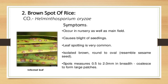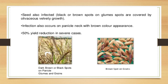The next disease is brown spot of rice. The causal organism is Helminthosporium oryzae. Symptoms are very characteristic: the disease occurs in nursery as well as main field and causes blight of seedlings. Leaf spotting is common — isolated brown, round to oval spots resembling sesame seeds, measuring 0.5 to 2.0 mm in breadth, which coalesce to form large patches. Seeds are also infected with black to brown spots on glumes covered by olivaceous velvety growth. Infection also occurs on the panicle neck with brown coloration. Severe cases can cause 50% yield reduction.